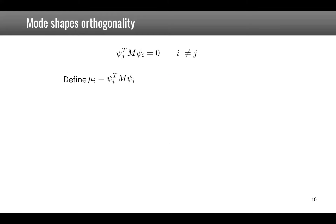When i equals j, this product is non-zero and we call it mu_i, the modal mass. In general: psi_i-transpose M psi_j equals delta_ij times mu_i, where delta_ij is the Kronecker delta.